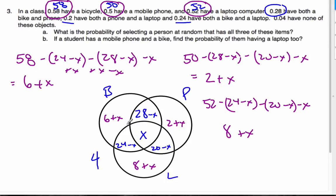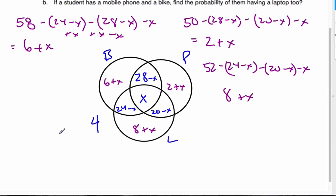Each region is defined by X, and what I do know, these were presented as percentages, so in total I must have 100 people. So if I make one great big giant equation, I can say that 6 plus X plus 28 minus X plus 2 plus X, every single region, making sure not to miss any, plus 24 minus X plus X plus 20 minus X plus 8 plus X, this has to be 100.